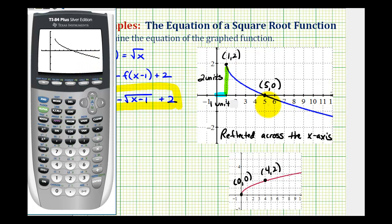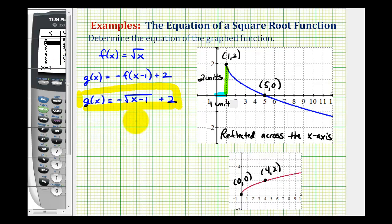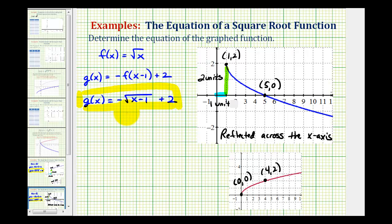Let's also verify that it does contain these two points. So we'll press second graph, notice how the point one, two, and the point five, zero are on our function. So this does verify we found the equation of our function correctly. I hope you found this helpful.